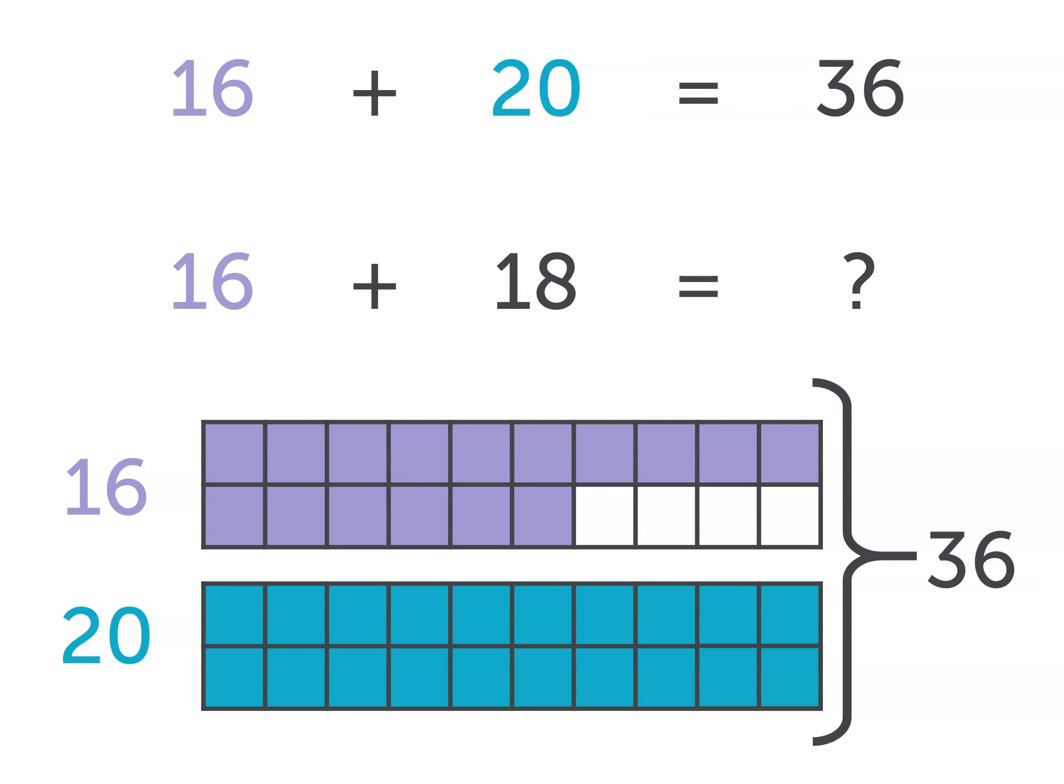Now let's say, instead of 20 blue blocks, we'd like to have 18. How many blocks do we need to take away? We'll need to remove 2 blue blocks, like this.